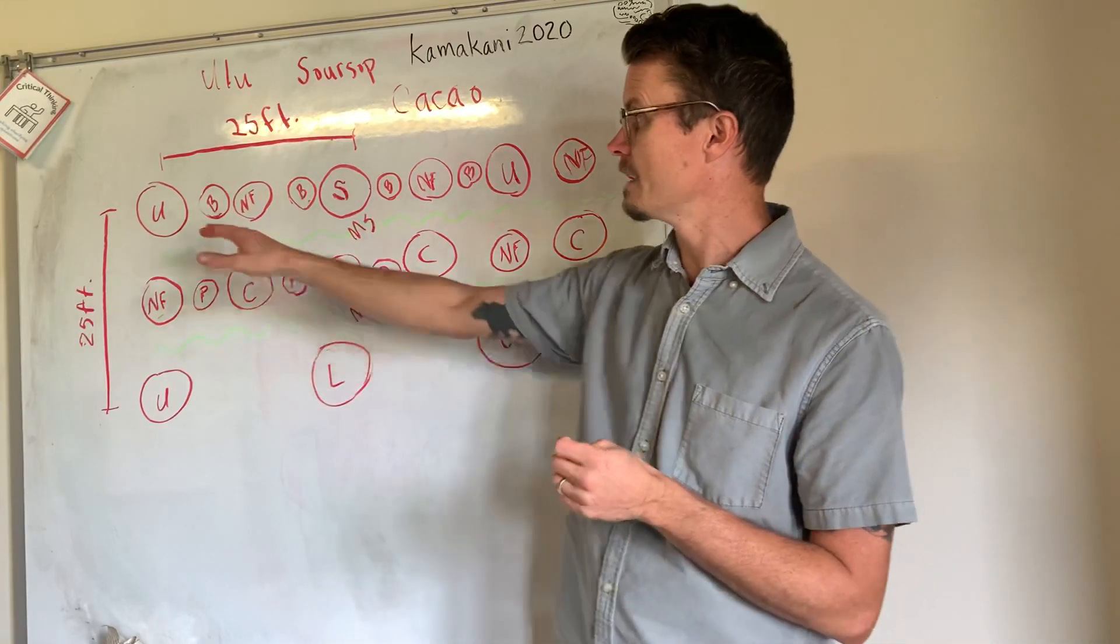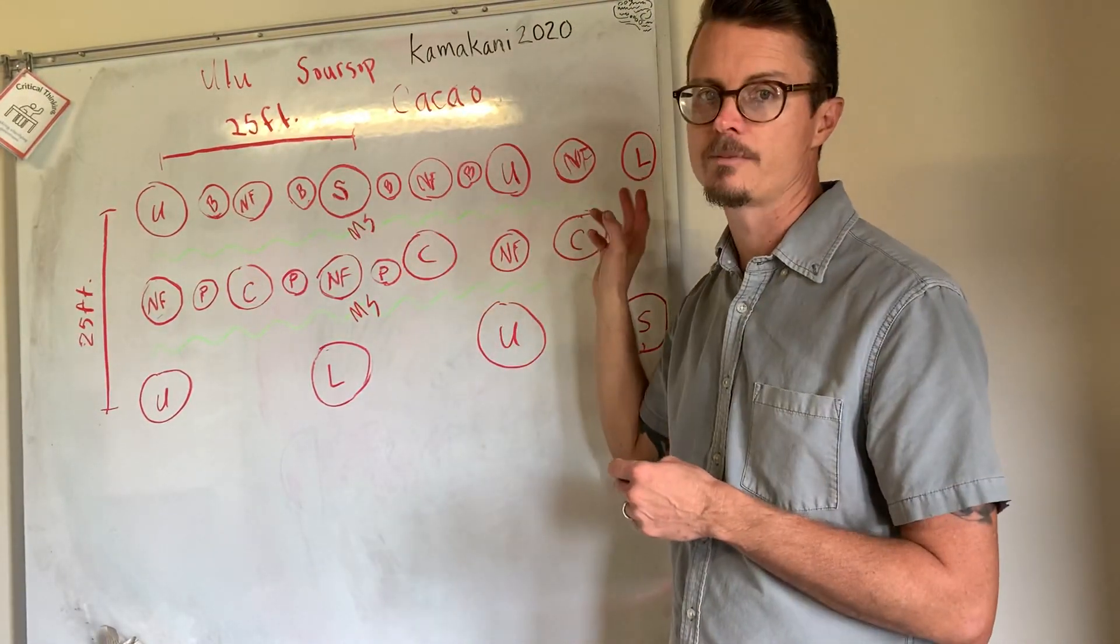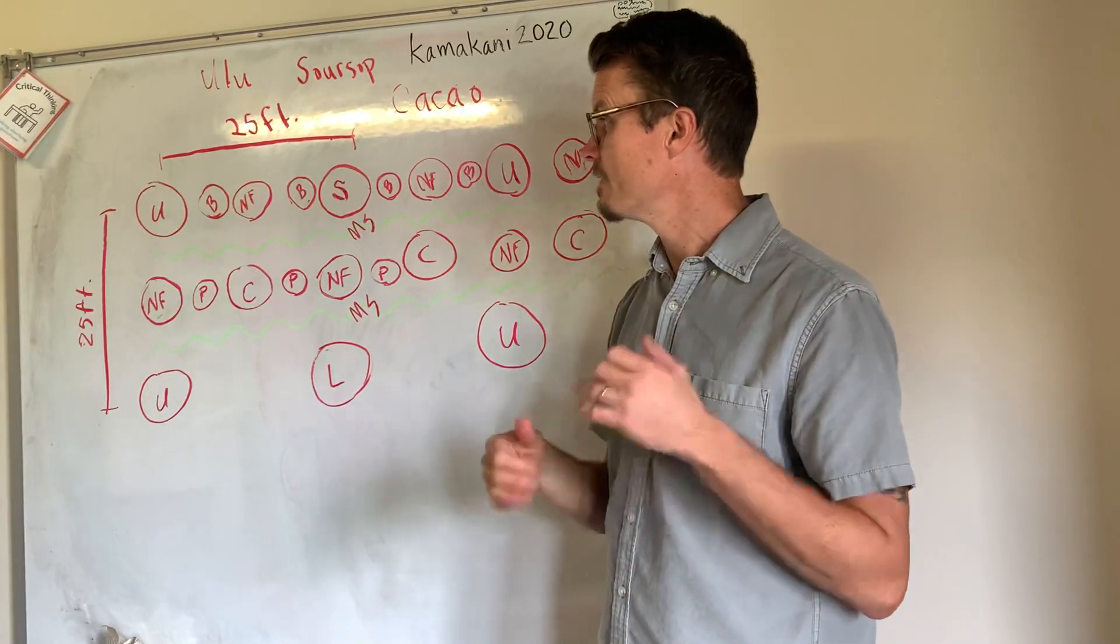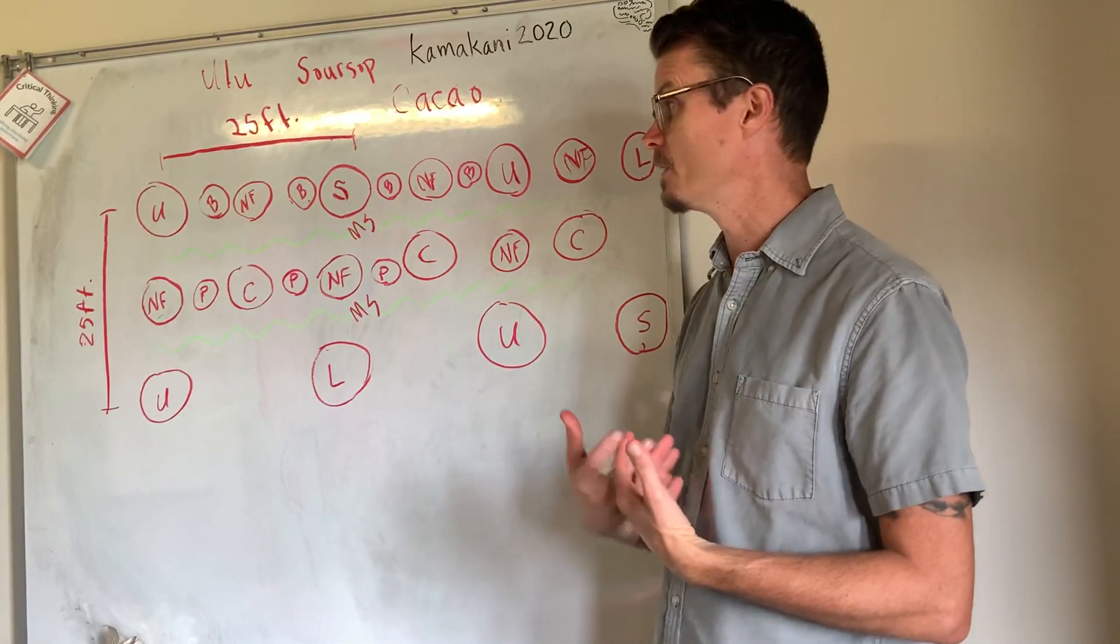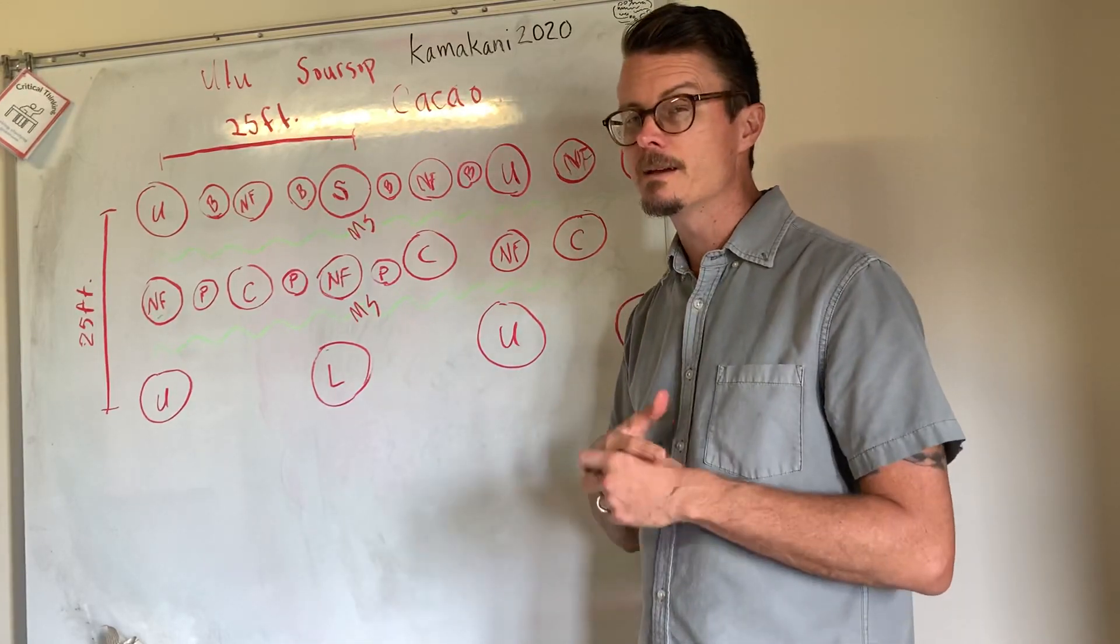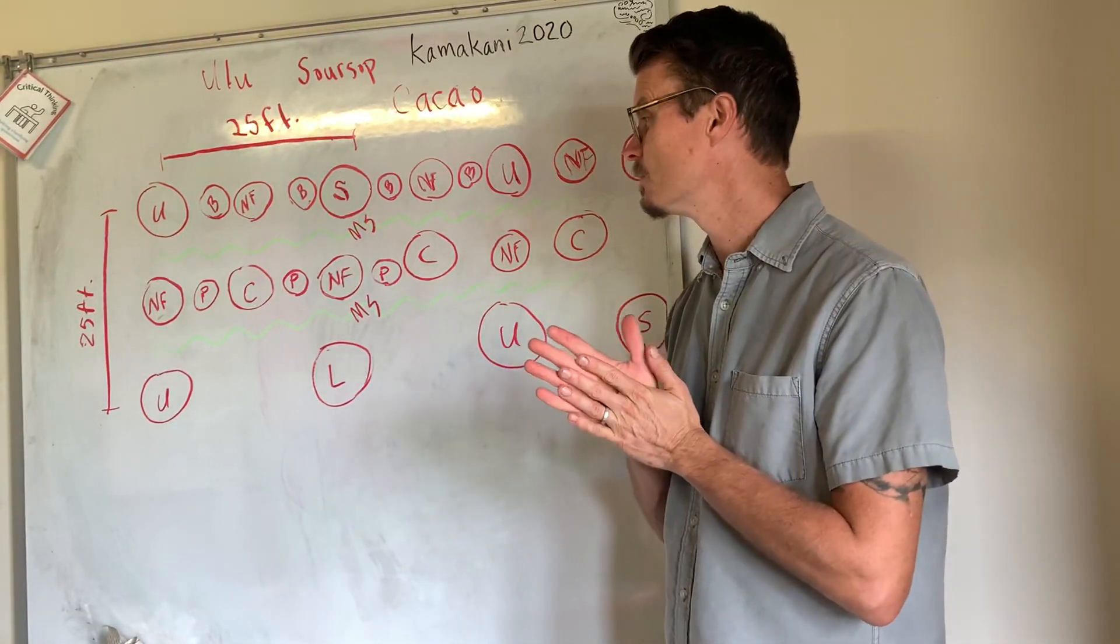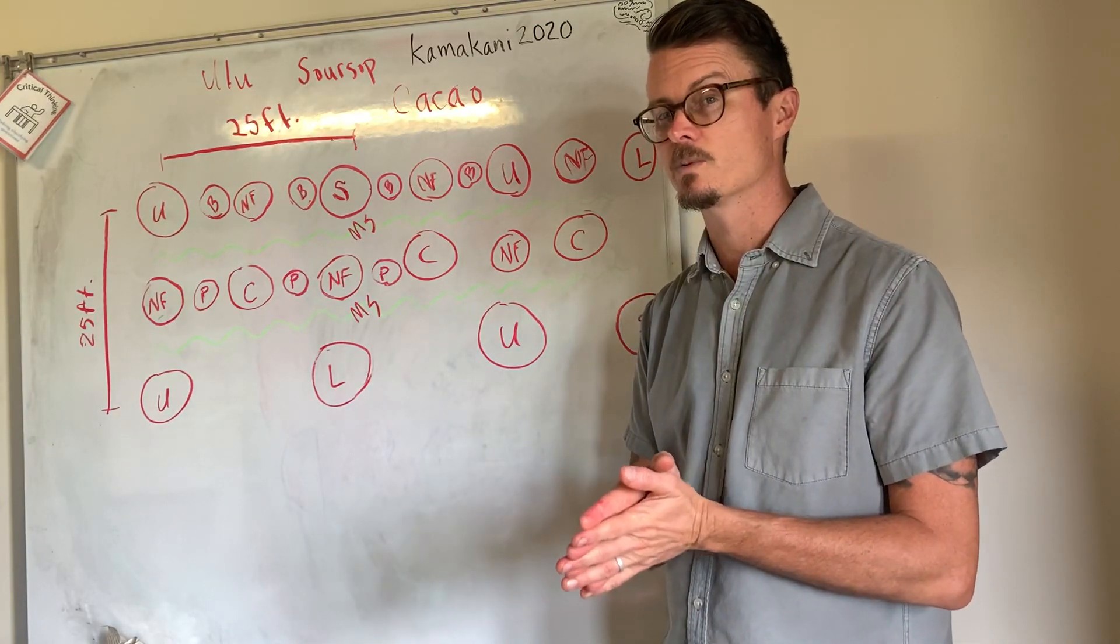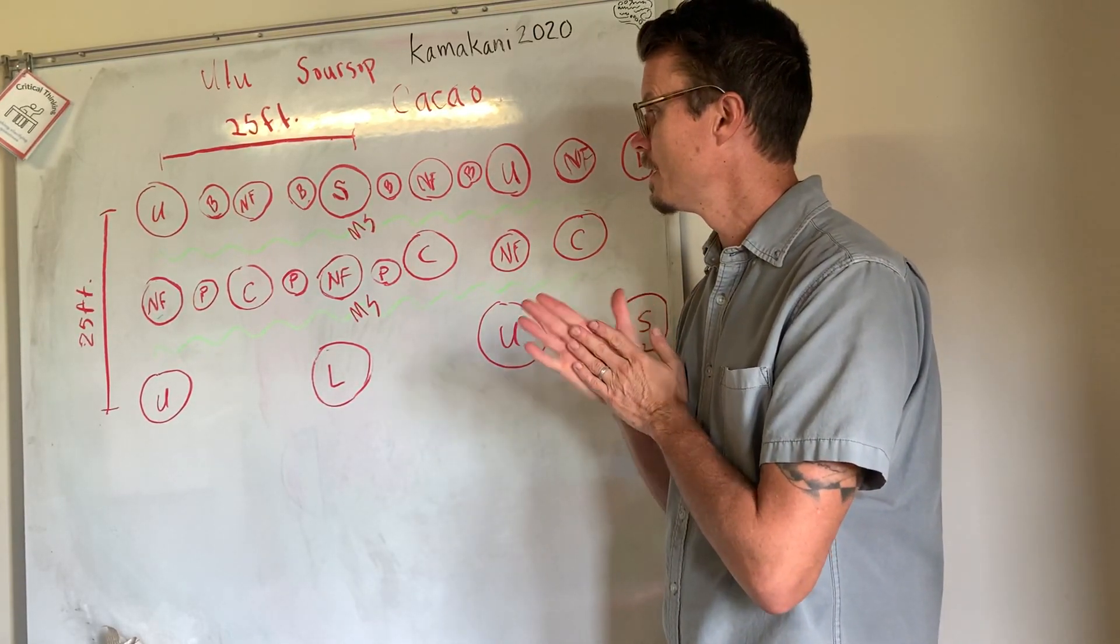And so our next big step after the design is to come in and start laying out measurements of where we want these anchor trees, the ulu, the soursop, the longan, and the cacaos, because that sort of designates where everything else is going to go. Once we have those measurements taken out, we can start clearing some space, getting the pigeon pea seeds in, getting some stuff besides the grass up and going, getting nitrogen fixers. We'll be using ice cream bean, Gliricidia, Sesbania maybe. I may throw in one or two other things, maybe some Calliandra or something like that. But primarily, I think ice cream bean and Gliricidia, those have been the two biggest winners for us in our area, and I've got plenty of seed for those. So I think we'll be going with that.